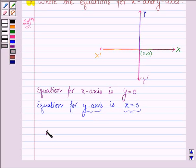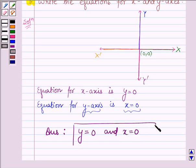Hence our answer is equation for x-axis is y equals 0 and equation for y-axis is x equals 0. So this was quite simple. Hope you have understood it. Take care and have a good day.